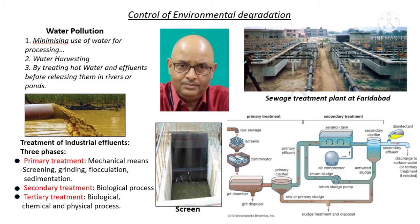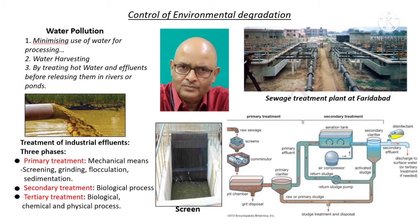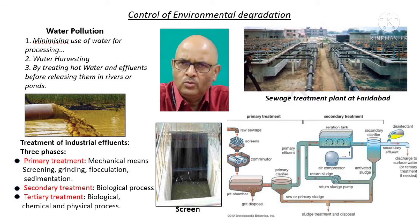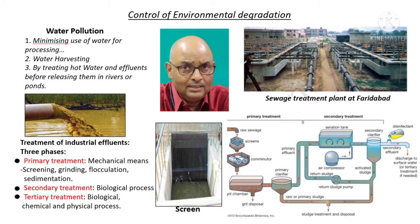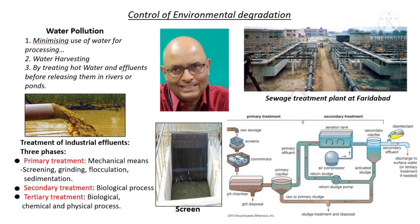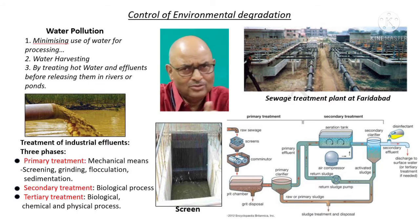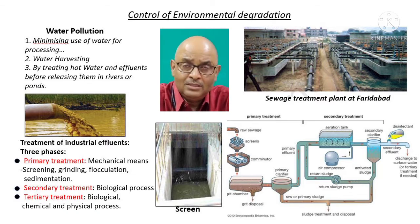Primary treatment is done by mechanical means. It involves screening, grinding, flocculation, and sedimentation. By screening, we prevent coarse solids such as plastics, rags, and other trash from entering the treatment plant. As you can see in the slide, solids get trapped by inclined screens or bar racks. Just imagine how you filter tea before pouring it into the cup - screening is a sort of filtering.